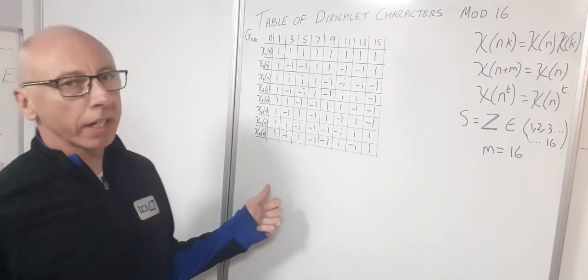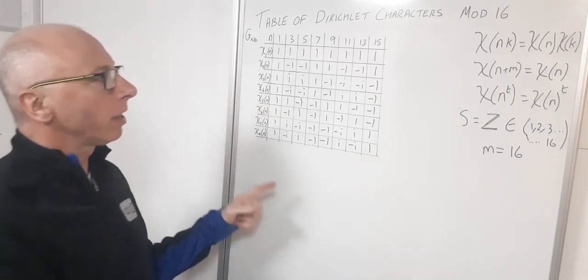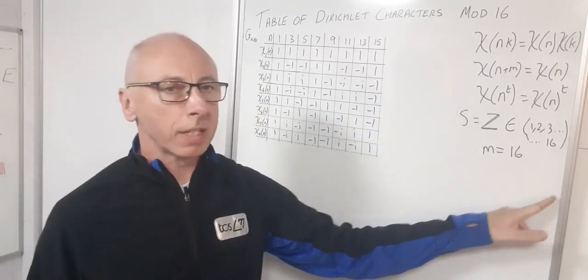In the last video we did a table of Dirichlet characters modulo 16, and this was the table we came up with using these properties.